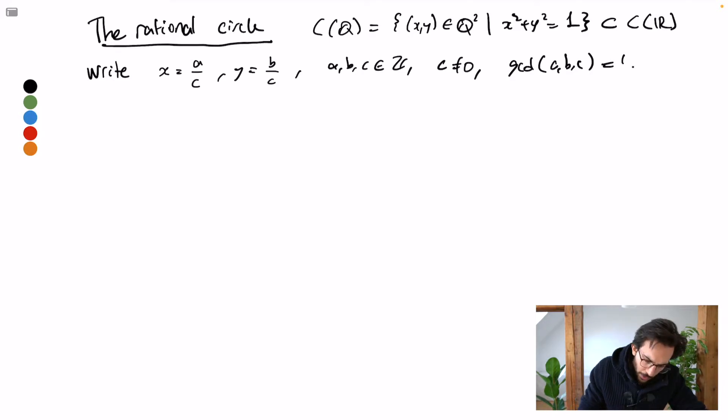Now, the question whether or not x squared plus y squared is 1 is equivalent to whether or not a squared plus b squared is c squared. After multiplying the first equation by c squared and clearing the denominators. That is, the triplet of integers a, b, c are the size of a right-angled triangle or is a Pythagorean triplet.